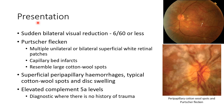Coming to the presentation of a case of Purtscher retinopathy, patients usually present with sudden bilateral visual reduction. The visual acuity will usually be 6/60 or less. A characteristic feature of Purtscher retinopathy is Purtscher fleckens — these are multiple unilateral or bilateral superficial white retinal patches, which are basically capillary bed infarcts and they resemble large cotton wool spots.